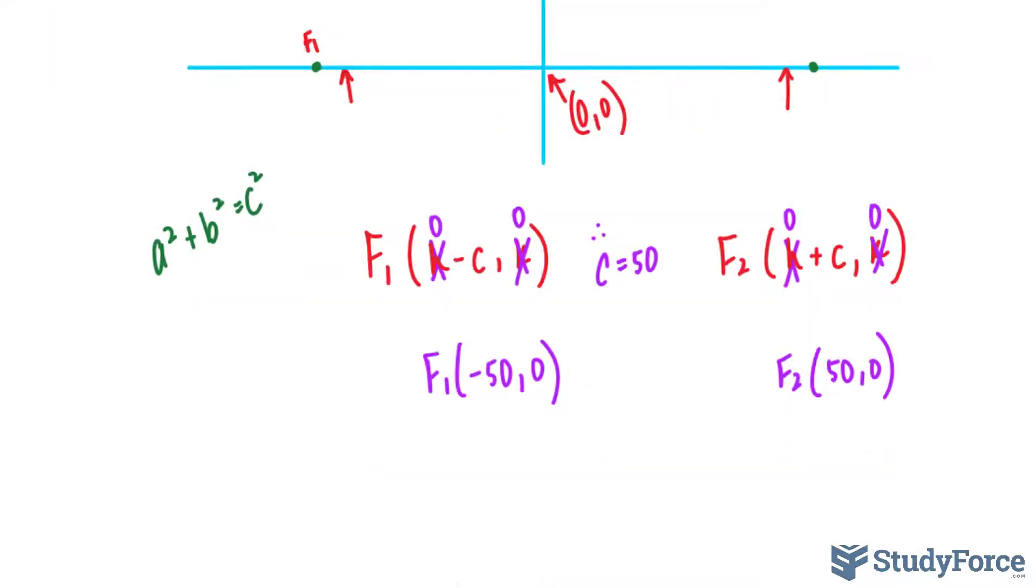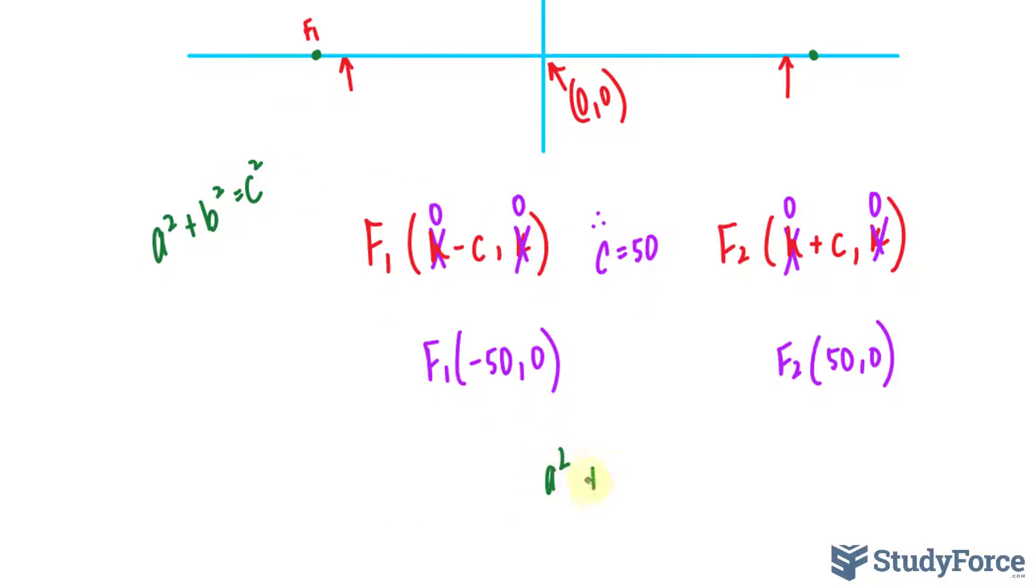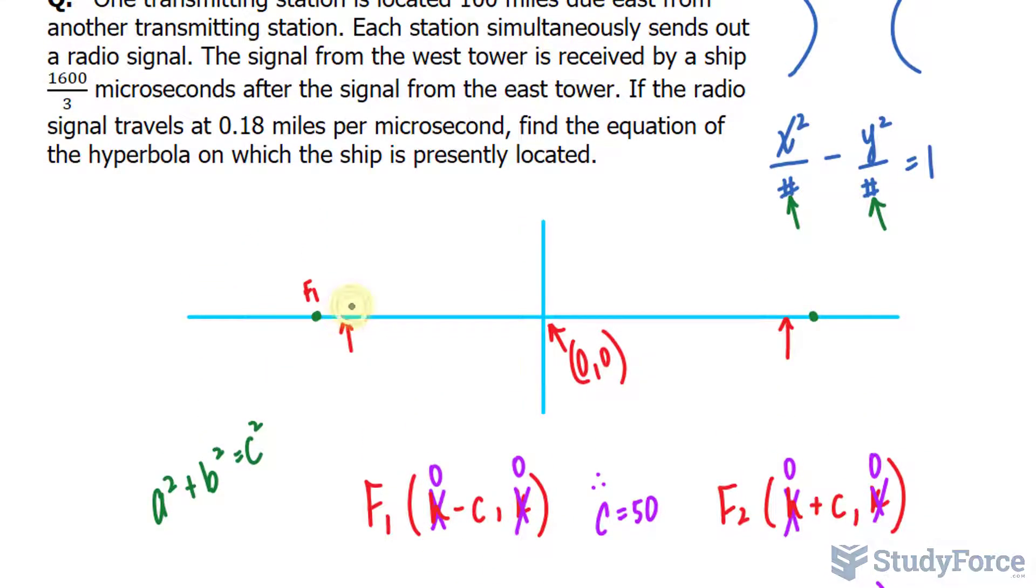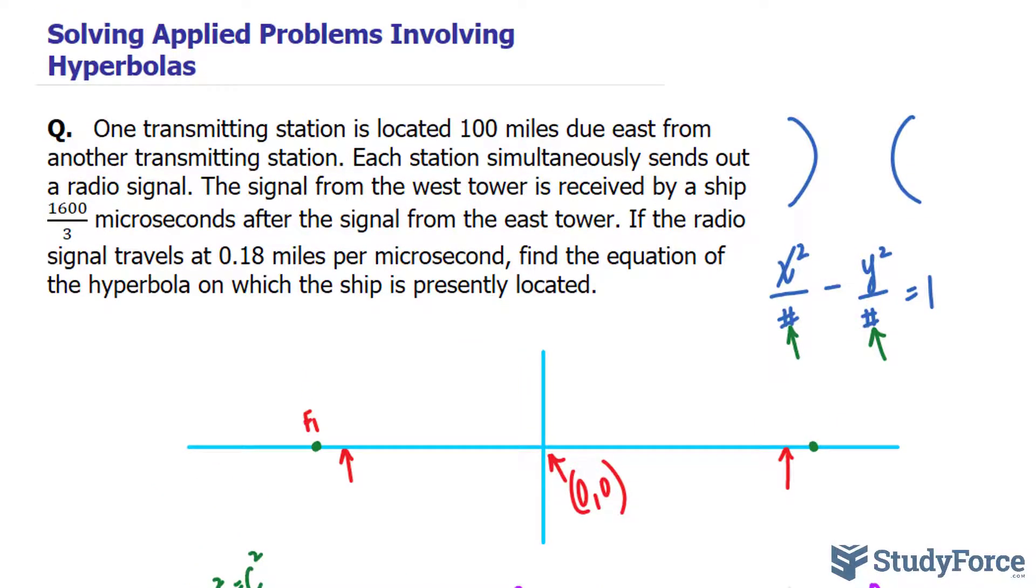Let's substitute what we found for C into here. We have A squared plus B squared is equal to 50 squared. Now, how do we go about finding A and B? For that, we need to know the distance from one vertex to the other. And we were given some important information. We were told that the signal from the west tower is received by a ship this many microseconds after the signal from the east tower.